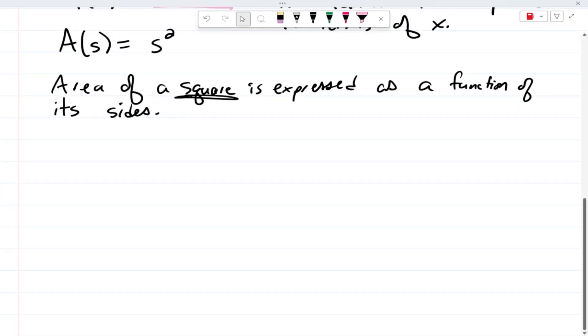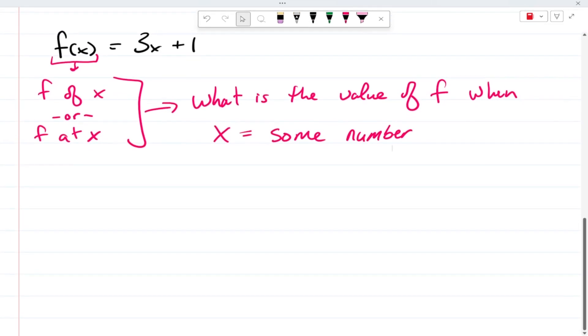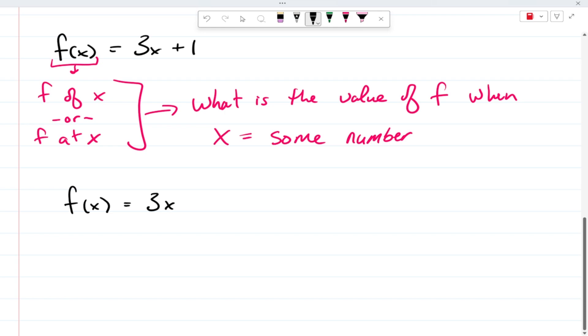Now, the next thing is, well, how do we read this stuff? So, we'll go back to the one I had earlier. This on the left-hand side is read f of x or f at x. And what you're asking us to do is you're asking us what is the value of f, so what is the value of f when x equals some number? Okay? That's the first thing. Second thing. This variable x is called our domain, the input, or the independent variable. This is the thing that we cannot control.